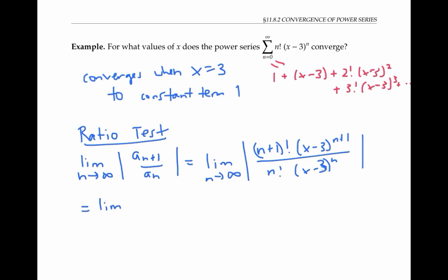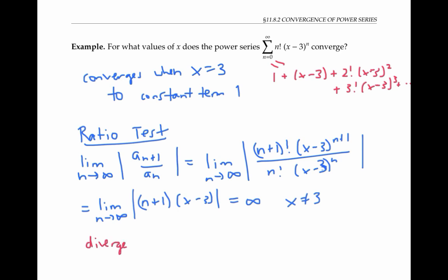Let's simplify by canceling things, and we get (n+1) times (x−3). Now x−3 is some non-zero number, since I already dealt with the case when x equals three. So I have a non-zero number that stays fixed as n goes to infinity, times a number that's going to infinity. So the absolute value of the product has to go to infinity, no matter what x value we have other than x equals three. The ratio test says that if this limit is infinity, the series diverges.